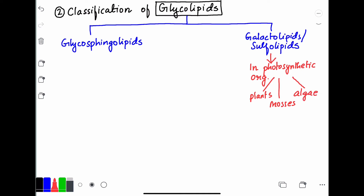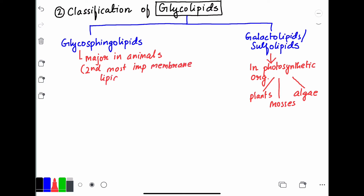The galactolipids and sulfolipids are not that important for us. We will mainly focus on glycosphingolipids. These are the majority in animals and are the second most important membrane phospholipid, found in several tissues.